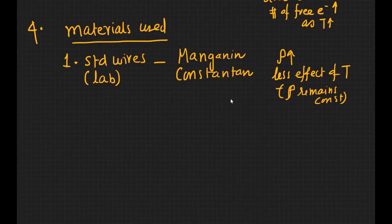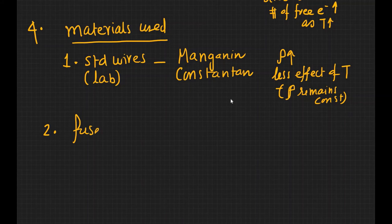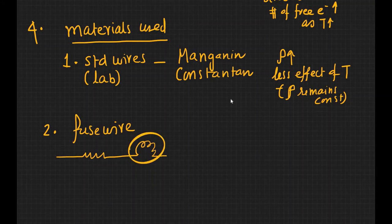That's what we need in lab. We need to make our experimentation error less by making sure resistance doesn't change due to temperature. Now the second is a fuse wire.